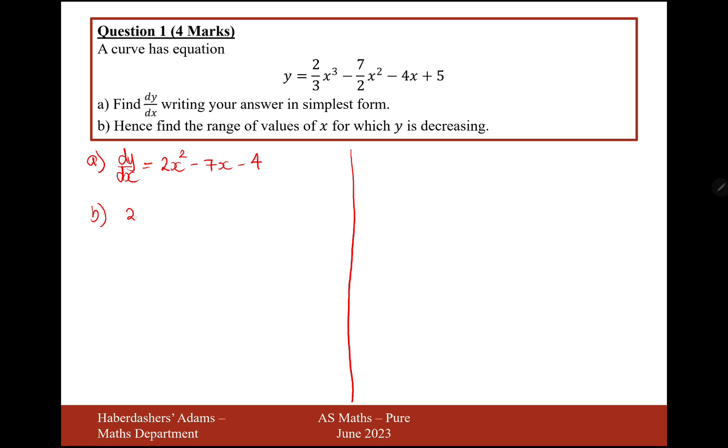So we're going to start off by writing 2x squared minus 7x minus 4 is less than 0. If the question were increasing, then you would put that inequality the other way around. So now we need to solve this, so I'm going to start off by factorising.